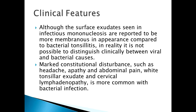There are some clinical parameters. As a rule, bacterial infections are more intense — for example, there are marked constitutional disturbances such as headache, apathy, and abdominal pain due to tonsillitis, which is called mesenteric adenitis. Sometimes you get white tonsillar exudate on throat examination, and you could also find cervical lymphadenopathy, which is more common in bacterial infection.